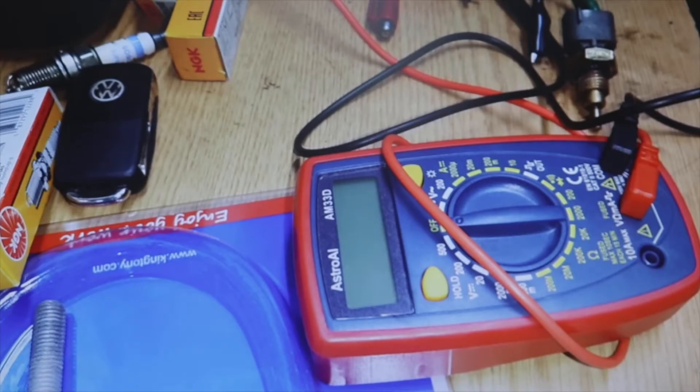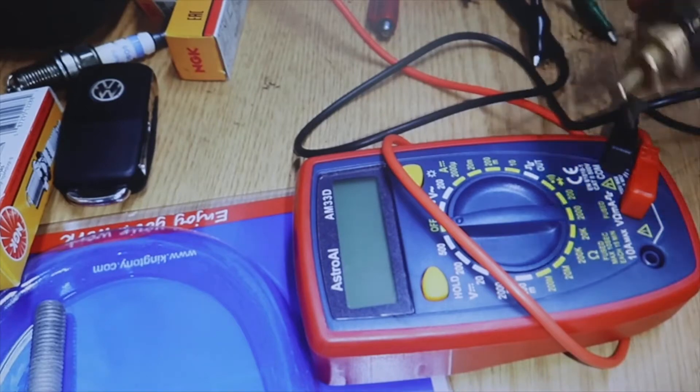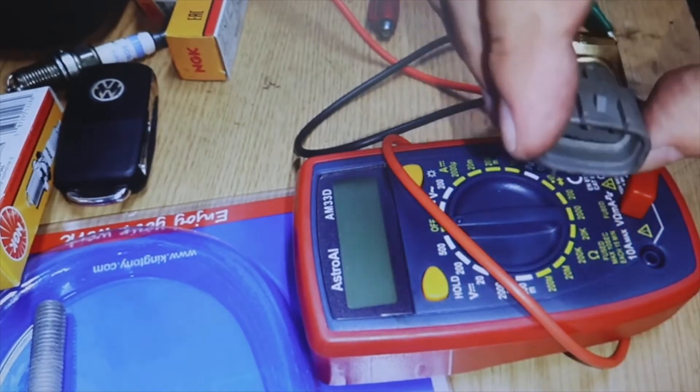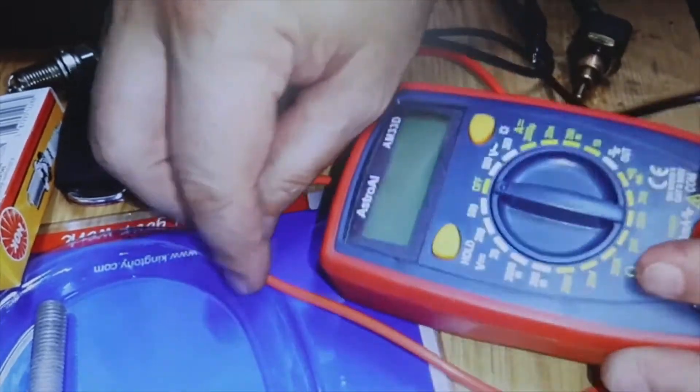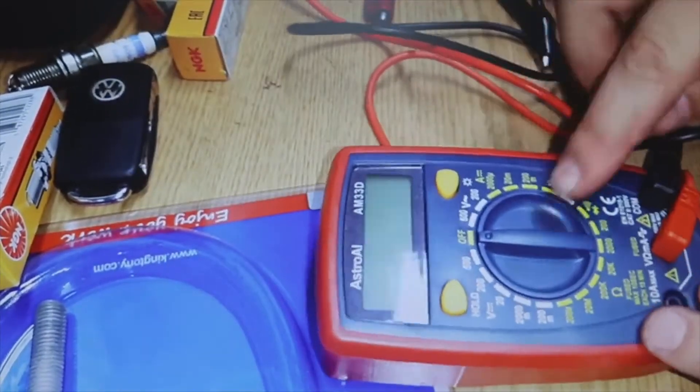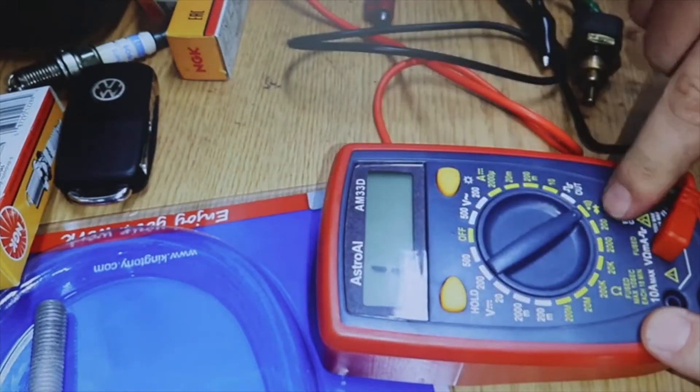This is the sensor, it is from a Suzuki. This one has three pins, most have two. What I am going to do is measure the resistance. Now it is hot because we have removed it with the engine warm, but being outside it cools more quickly and the values of the resistance should rise faster.